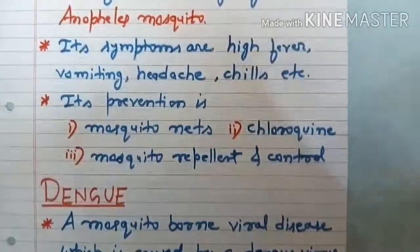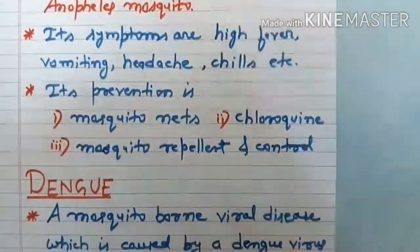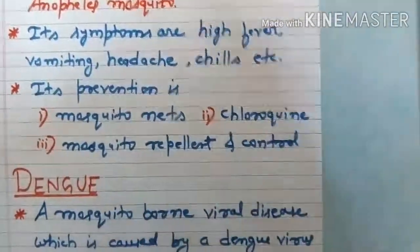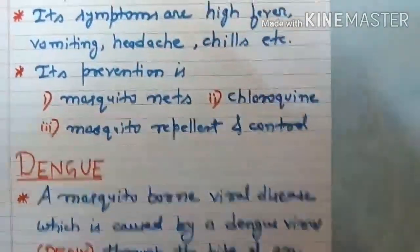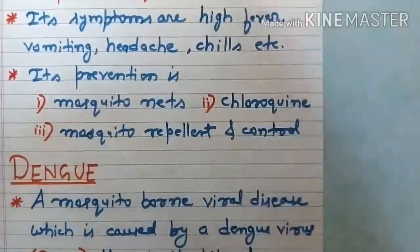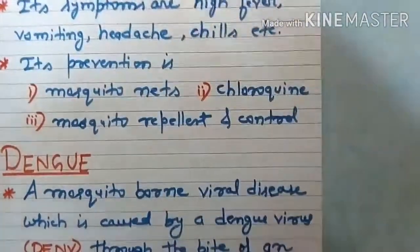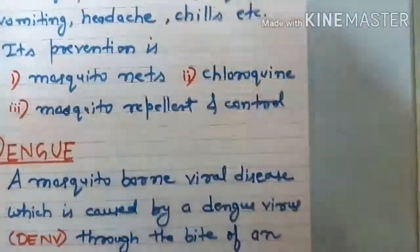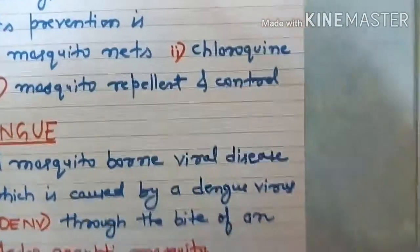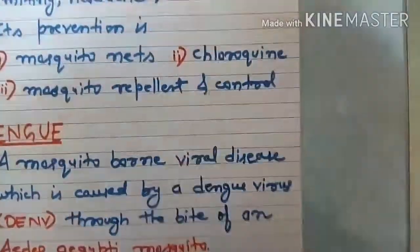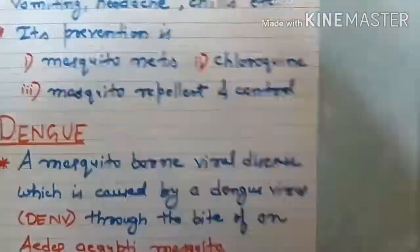The symptoms of malaria are high fever, vomiting, headache, and chills — meaning very intense cold. Its prevention and treatment include use of mosquito nets, chloroquine, mosquito repellants, and mosquito control measures like mosquito coils.